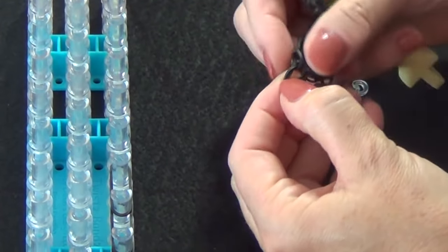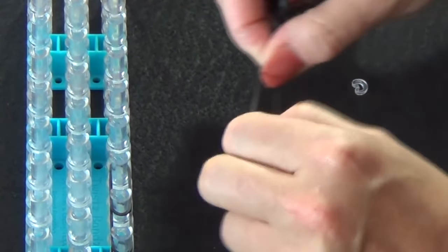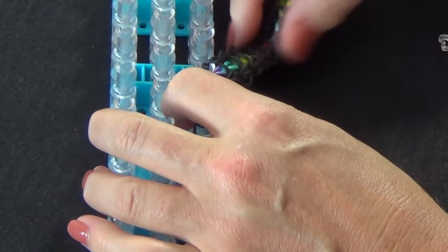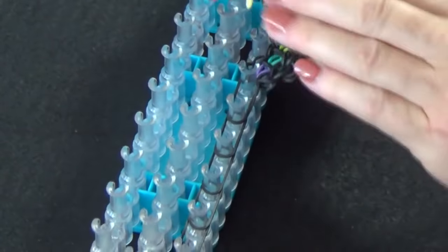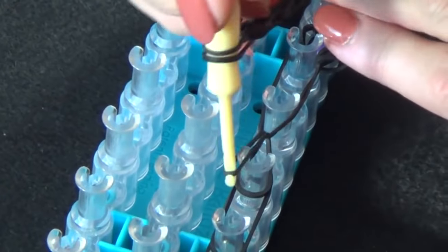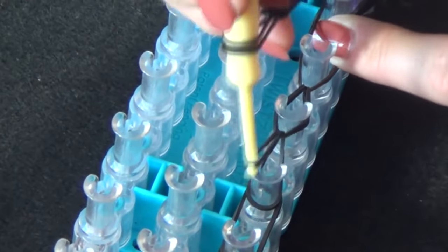Find that cap band again. Stretch it over the end. With your hook, you'll loop the single chain.